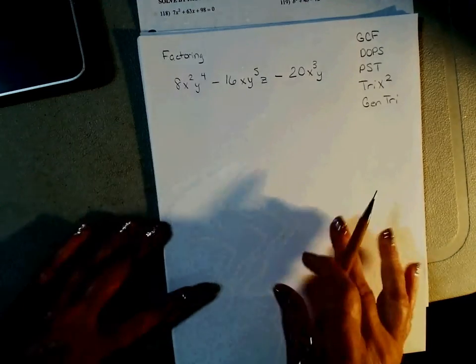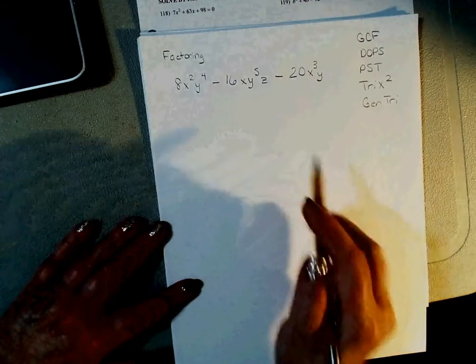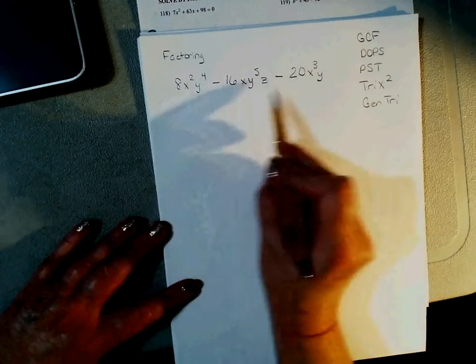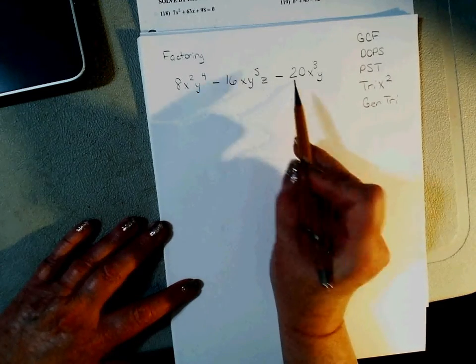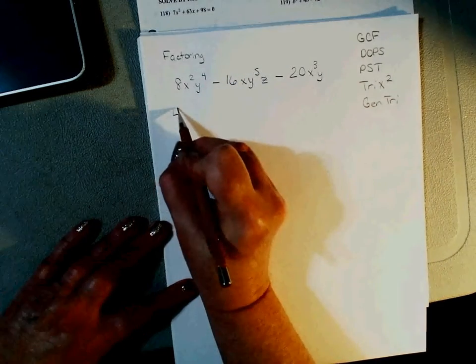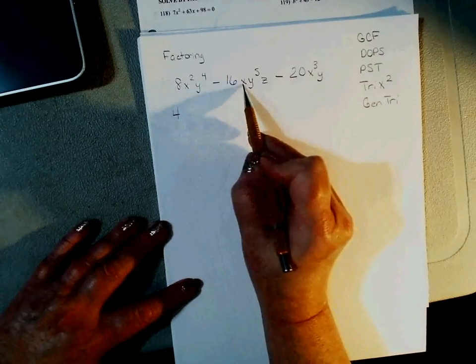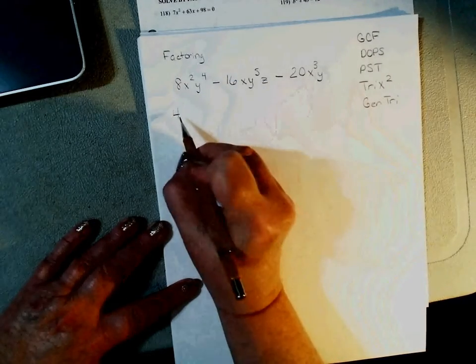So I've got this problem and I want to factor it and remember that our patterns of factoring, our greatest common factor, difference of perfect squares, perfect square trinomial, trinomial that starts with an x squared, and general trinomial. We do them in this order. So, I look to see if I have a GCF. 8, 16, and 20. What's the biggest number that goes into all of them? 4. X squared, x, and x cubed. They all have at least one x.